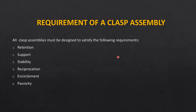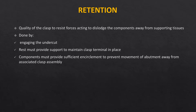All clasp assemblies must be designed keeping in mind: retention, stability, support, reciprocation, encirclement, and passivity. Retention is the quality of the clasp to resist forces acting to dislodge components away from the supporting tissue — that is, in a vertical direction against gravity.